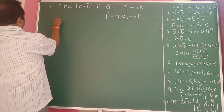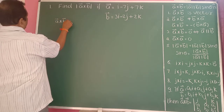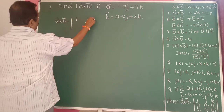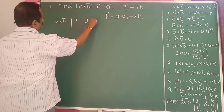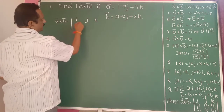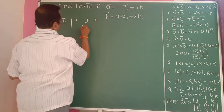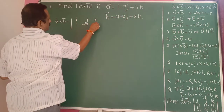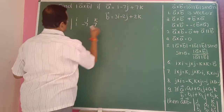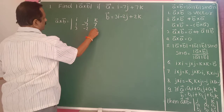So a bar cross b bar is equal to the determinant with i, j, k in the first row. Only the coefficients: 1, 1, minus 7 in the second row — that is 1, 1, minus 7 — and 7, 3, minus 2 in the third row — that is 7, 3 minus 2, and 2.